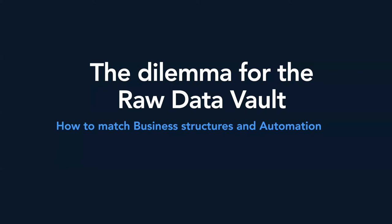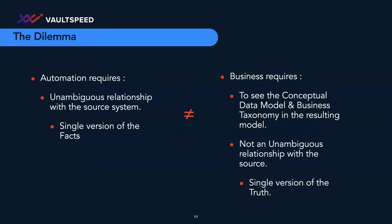How can you actually match them? Because on the automation side you require an unambiguous relationship with the source system — a single version of the facts. But on the other hand, you want to see the conceptual data model and the business taxonomy in that data, and there is typically not an unambiguous relationship with sources that are at different levels and use different terms — and there are probably some transformations needed. That's called the single version of the truth. How you bring these two worlds together, and as fast as possible, is something you want to do already mostly in your raw data world, and then afterwards in your business data world.